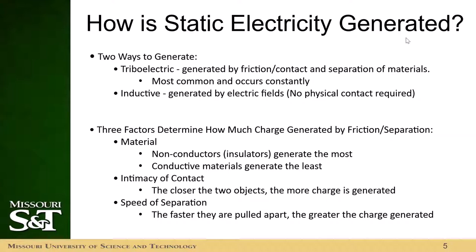How is static electricity generated? There are generally two ways to generate static electricity: triboelectric and inductive. We're not going to be dealing with inductive much in the lab because that occurs in things like dynamos and alternators. But triboelectric, we're going to see every single day. It's generated by friction and/or contact and the separation of materials. In triboelectric generation, there are three things to consider: the material, the intimacy of the contact, and the speed of the separation.